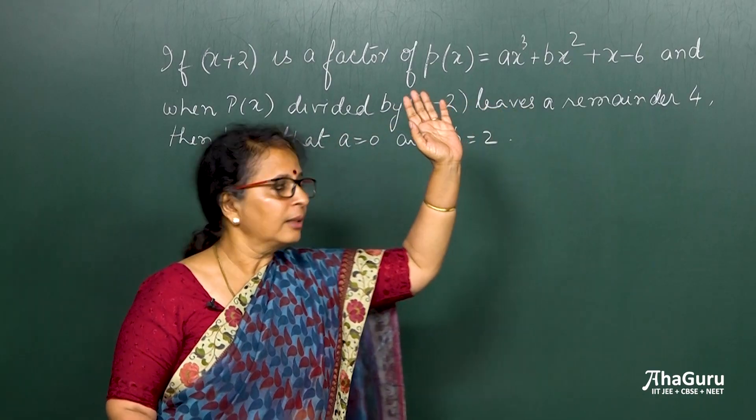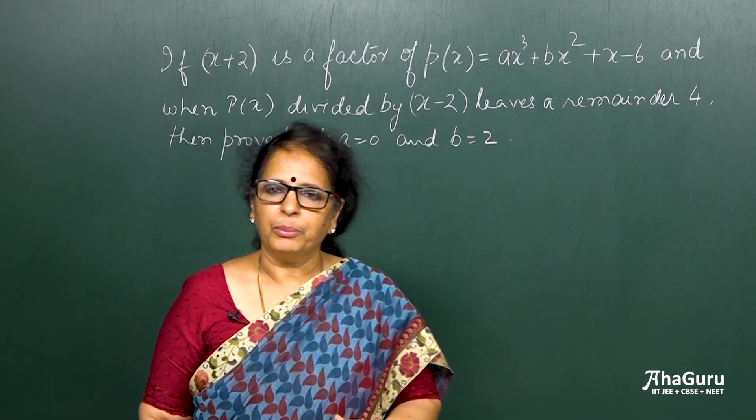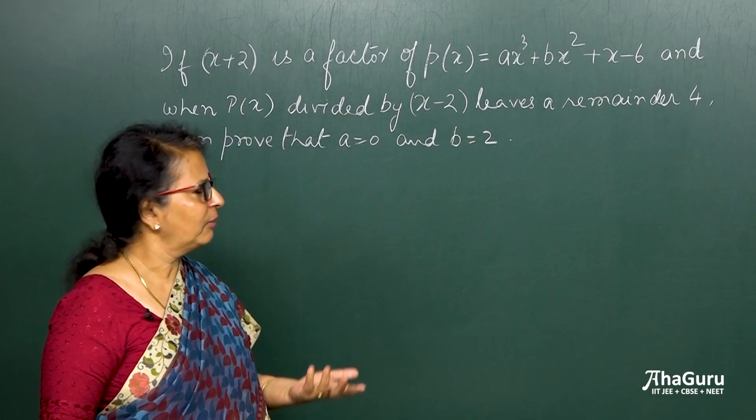See that these are the only two variables, a and b. It is a polynomial in x and the variables are a and b. So I will get two variables, two equations, and then I can solve them and get the answer.